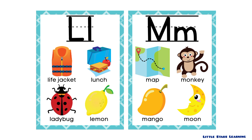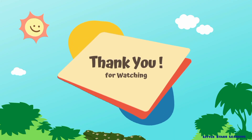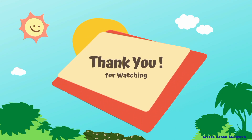L is for life jacket, lunch, ladybug, and lemon. M is for map, monkey, mango, and moon.